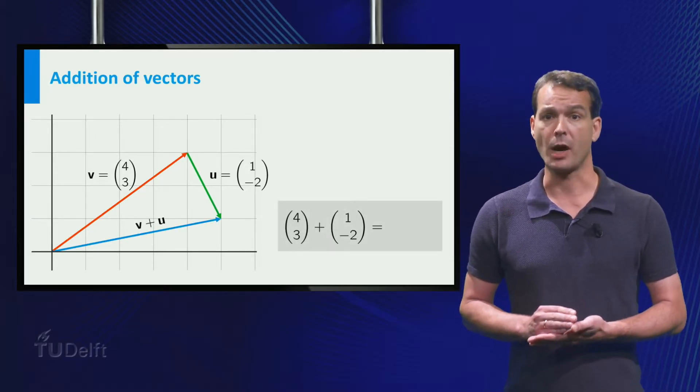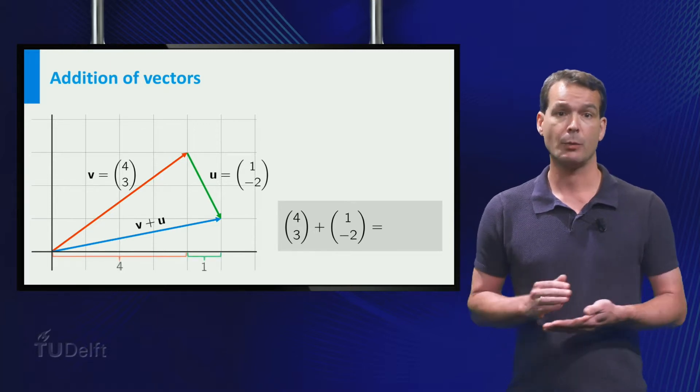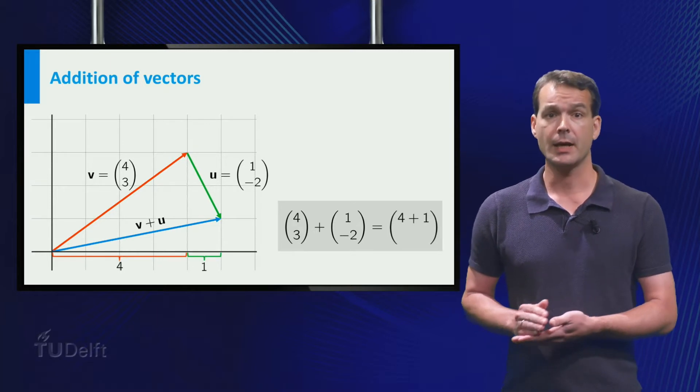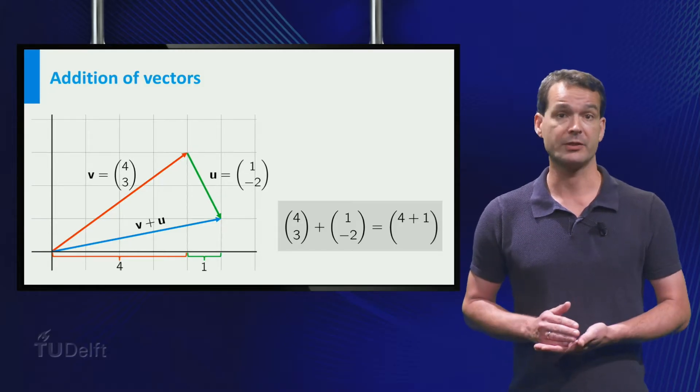First we look at how much we move in total to the right. We move 4 to the right for v and then 1 to the right for u, so 5 in total.